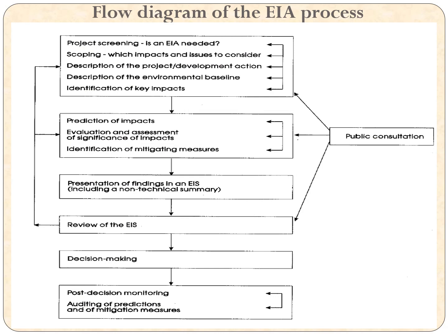This diagram shows how the EIA process is carried out: project screening to determine whether EIA is needed, then scoping to identify critical issues, then description of the project or development action, description of the environment where the project is being carried out, identification of key impacts, prediction of impacts, evaluation and assessment of the significance of impacts, and identifying mitigating measures. An environmental impact statement is then prepared, and the findings are presented, reviewed, and a decision is made.